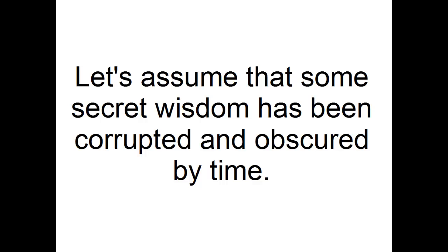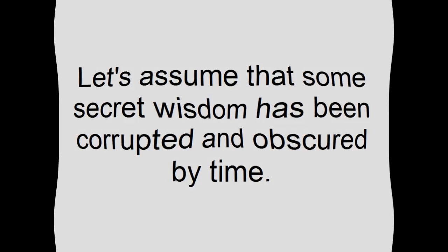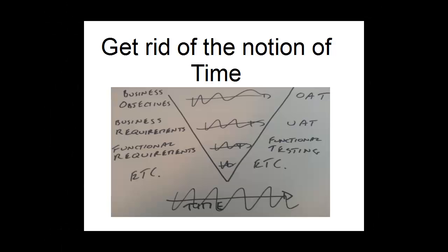First we have to get rid of the notion of time. Every project I've been on has iterations, regardless of whether it's waterfall or agile or whatever else. Nothing works with a linear timeline because we learn things as we go. So assume that any model that uses a linear representation of time with no feedback loops and no iteration will not map onto the real world.